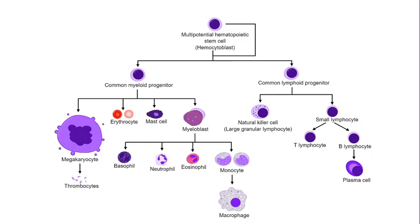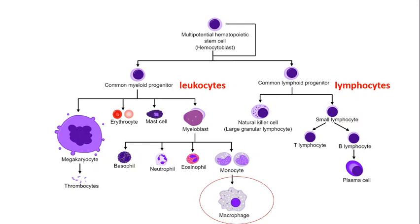So this is white blood cells in this diagram. Where you see referred to in your booklet these two terms — leukocytes and lymphocytes — that's what they're referring to. At the top you can see you've got a stem cell, and leukocytes and lymphocytes are both different types of white blood cell. It just refers to what kind of cell they come from, and you don't need to know any more detail than that.